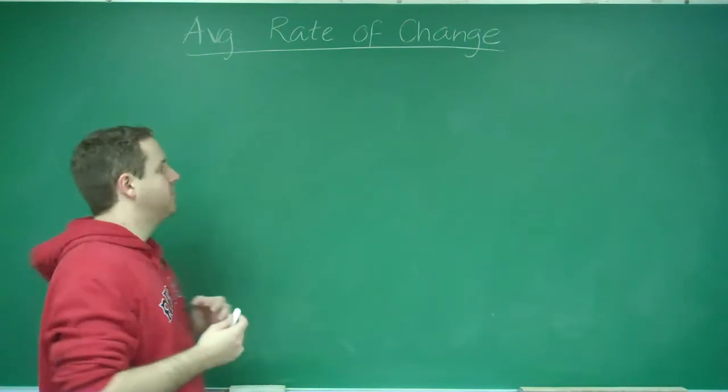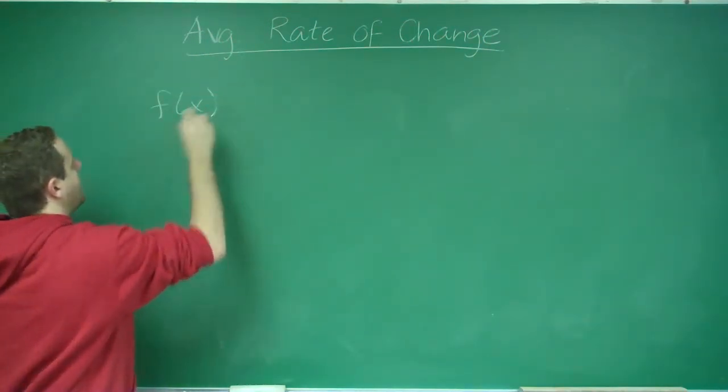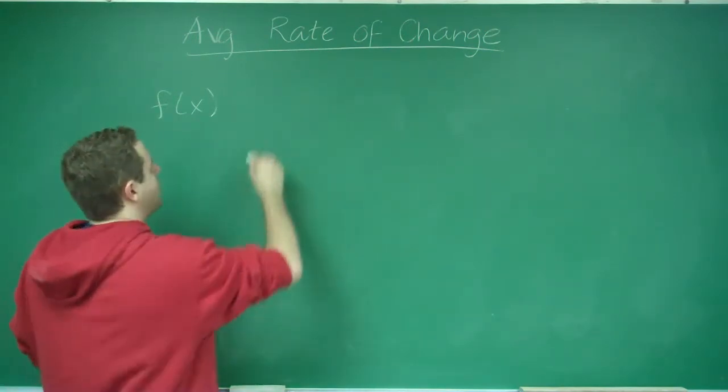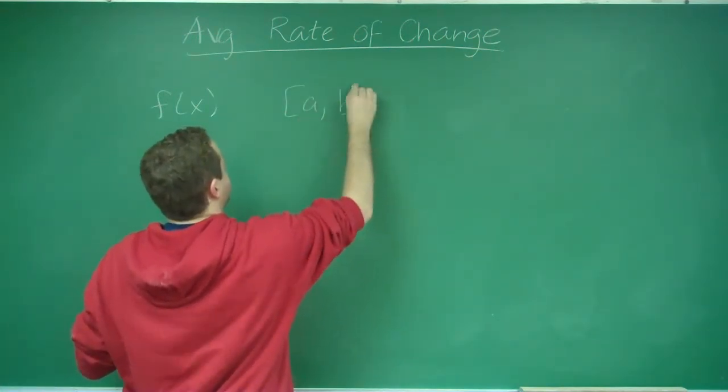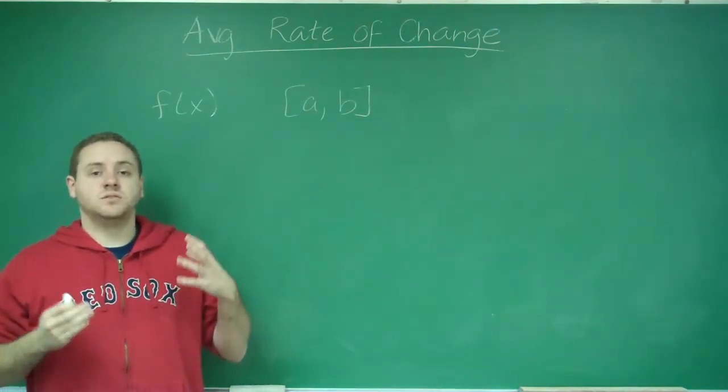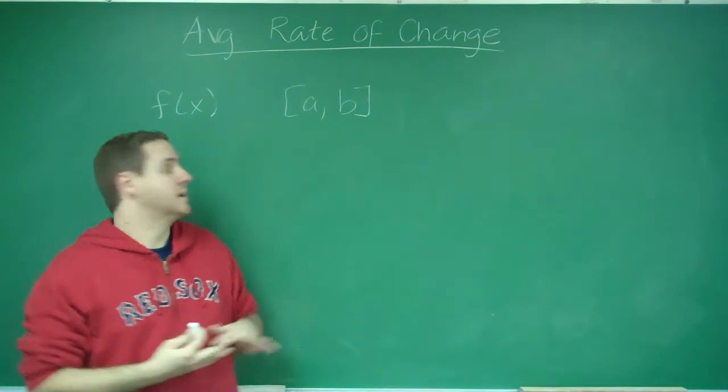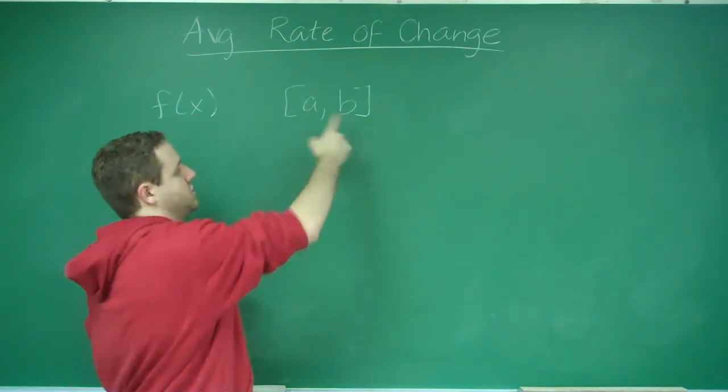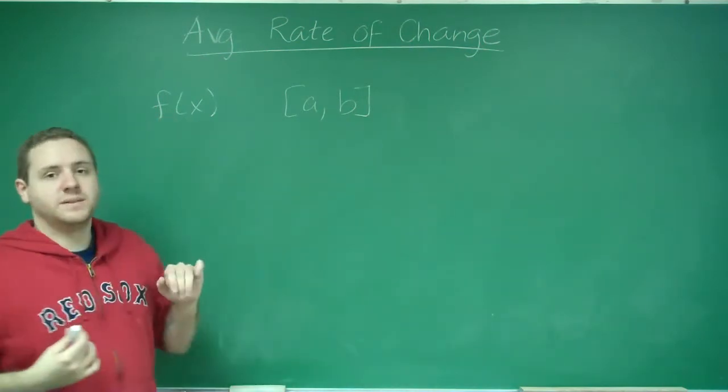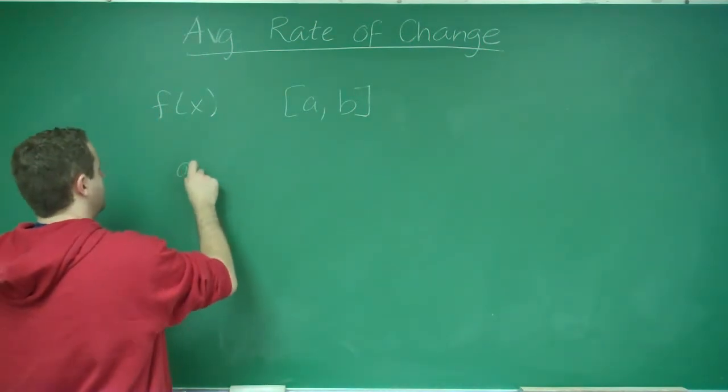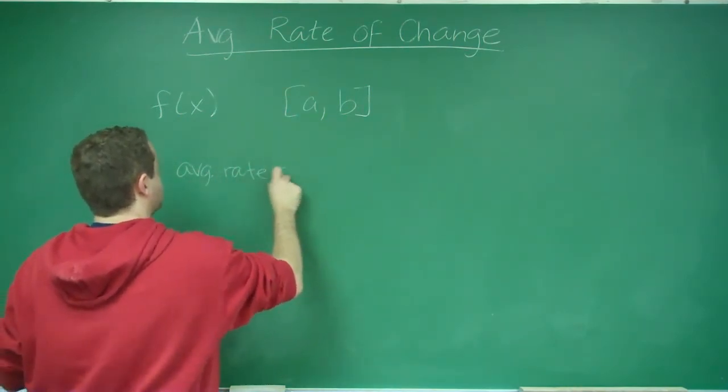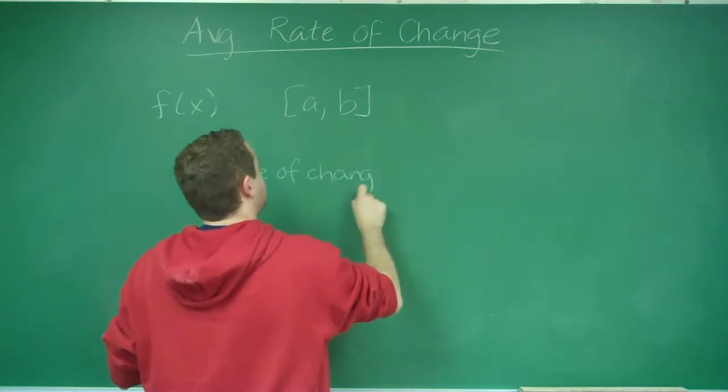Now, if we have some function f of x, and you're asked what is the average rate of change of f of x on the interval a to b, all you need to do is delta y over delta x. Well, this is like your x1, this is your x2, and to get the y1 and y2, all you have to do is plug them into f.